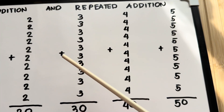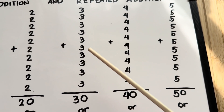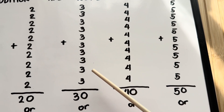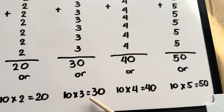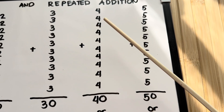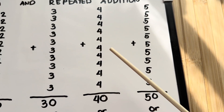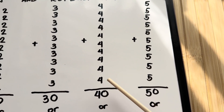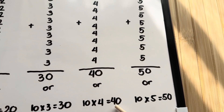Next, 3 plus 3 plus 3 plus 3 plus 3 plus 3 plus 3 plus 3 plus 3 plus 3 plus 3 plus 3 is equals to 30. Or, 10 times 3 is equal to 30. 4 plus 4 plus 4 plus 4 plus 4 plus 4 plus 4 plus 4 plus 4 plus 4 plus 4 plus 4 is equal to 40. Or, 10 times 4 is equal to 40.